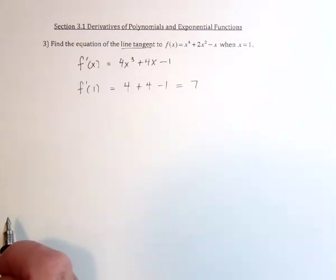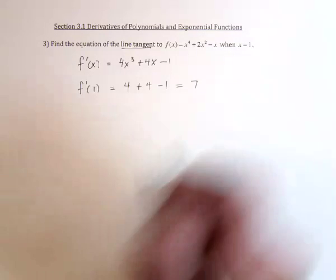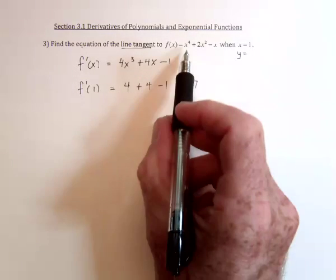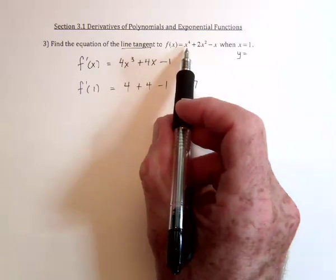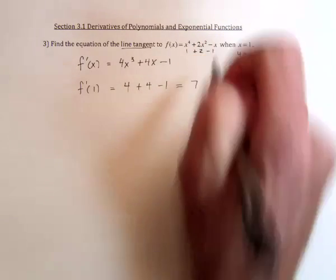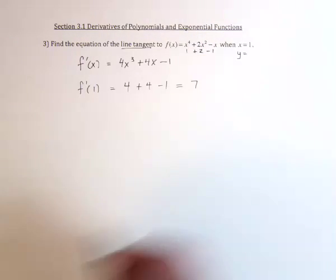Then we could use the point-slope formula if we had an x and a y value. So for this x we need a y value. Substitute 1 into the original problem, and that would say 1 plus 2 minus 1. The 1s cancel, leaving y equals 2.